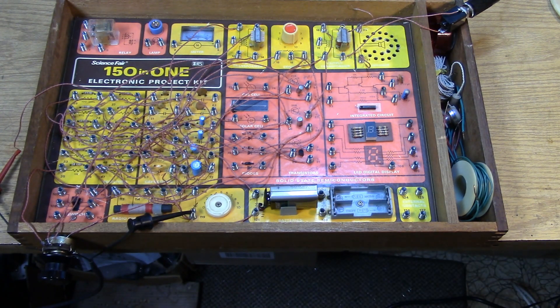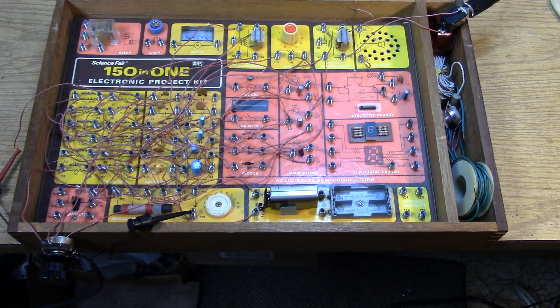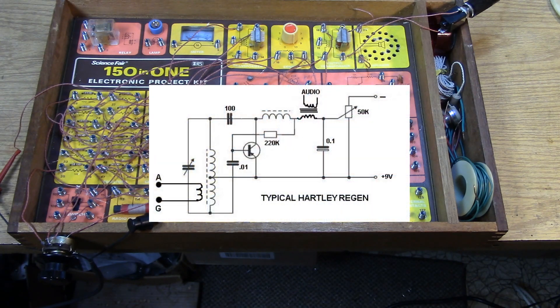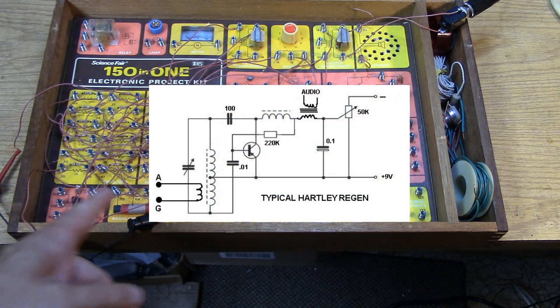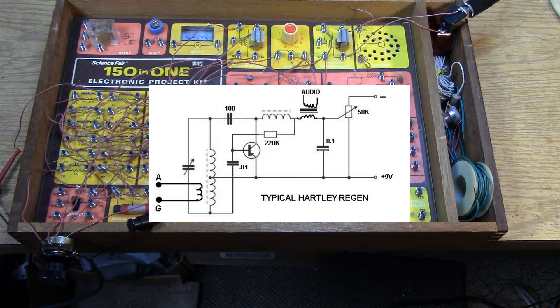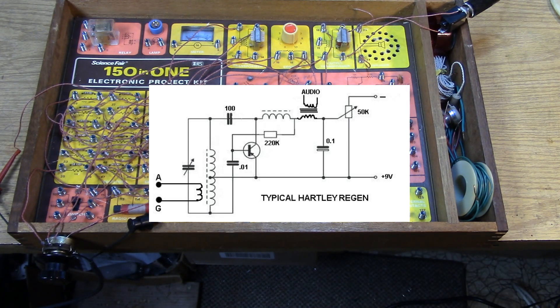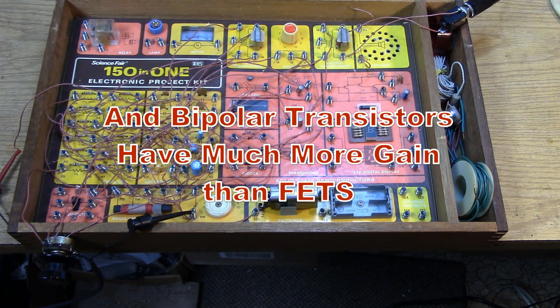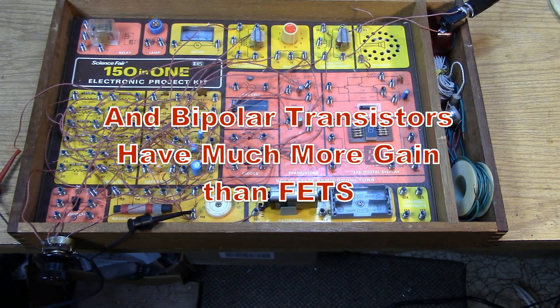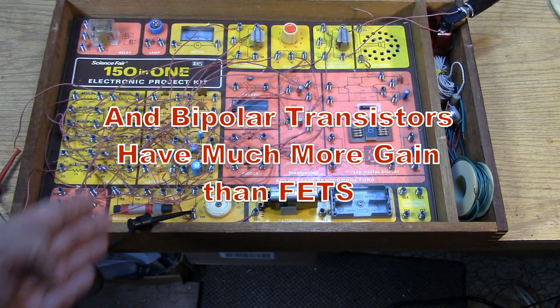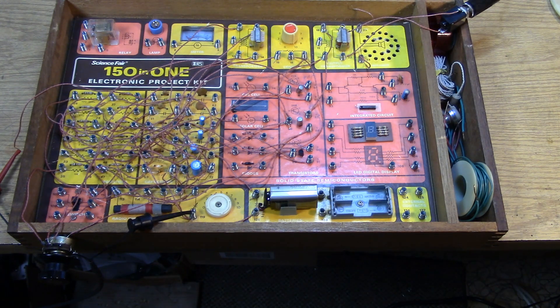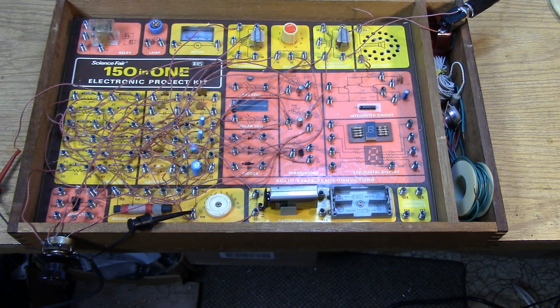The other type of regen we could possibly look at is the Hartley style, using the center tap. But the problem here is, again, we have way excess feedback, since it's a center tap. In, say, 100 turns of wire, you only need to have about maybe 20 of them that are part of the tap, the center tap. Not 50, as this thing is. So we'll run into the same problem. The detector will want to go into oscillation immediately.